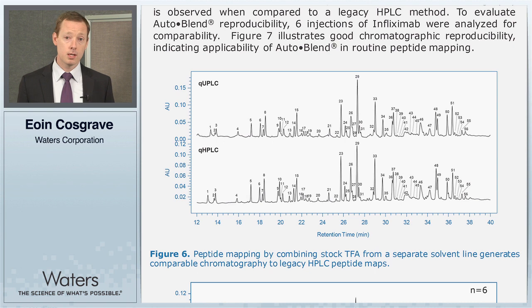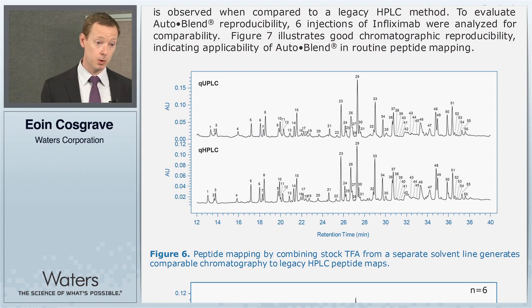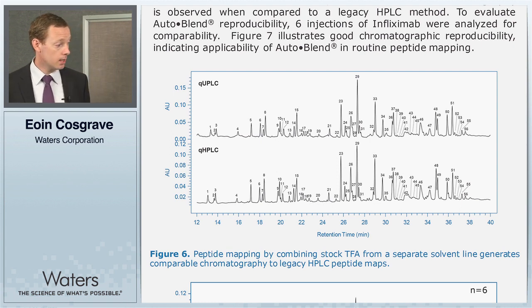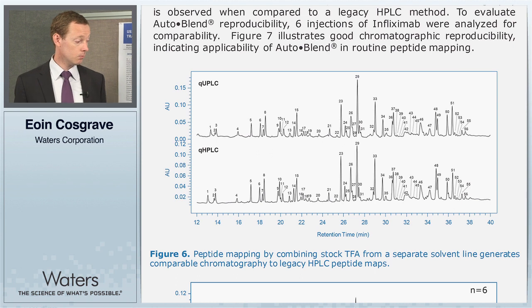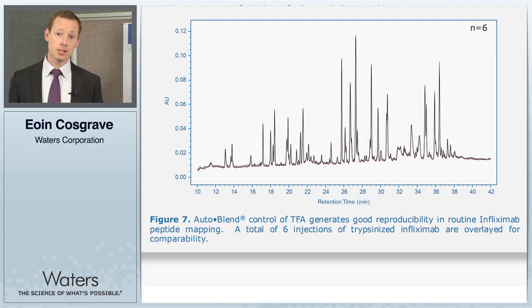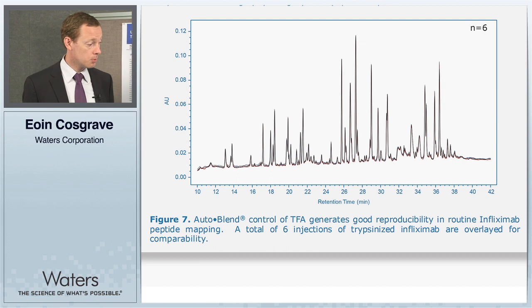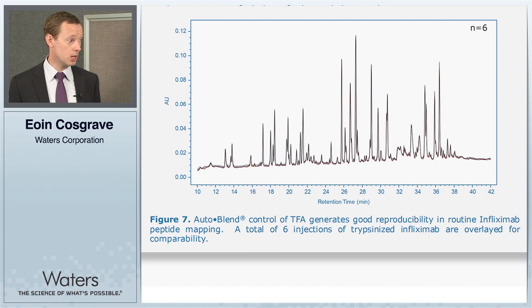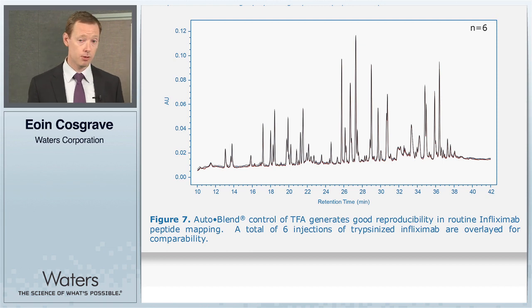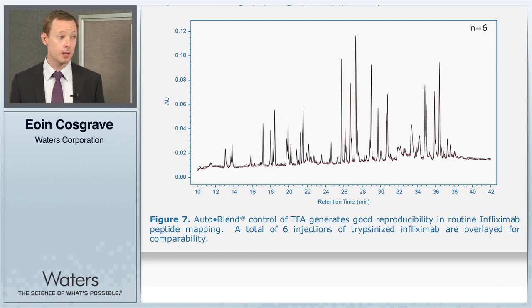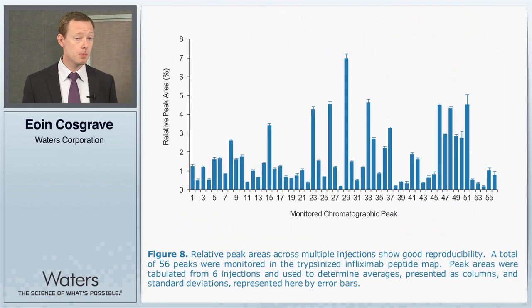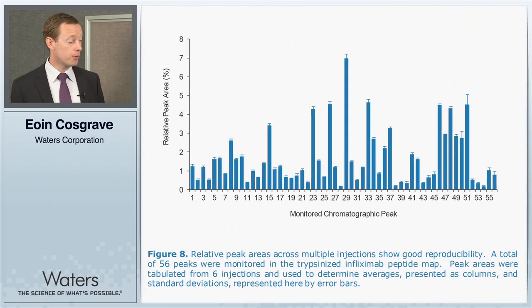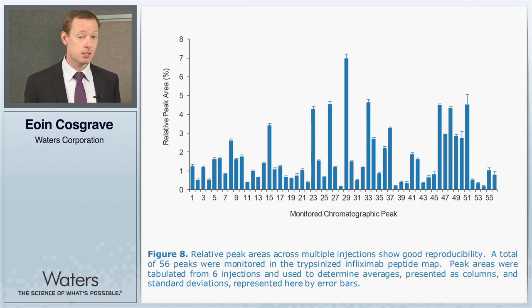The real goal was to assess reproducibility using AutoBlend, since that is the big challenge for QC labs. In figure seven, we overlay six different injections and find it's indistinguishable — there is no difference between these chromatograms, which is exactly what we hoped to achieve. In figure eight, we looked at the reproducibility of peak area across six injections using AutoBlend, and the peak area reproducibility is excellent.